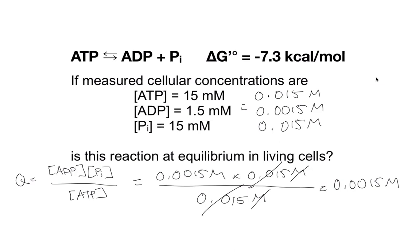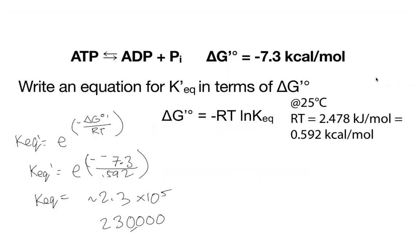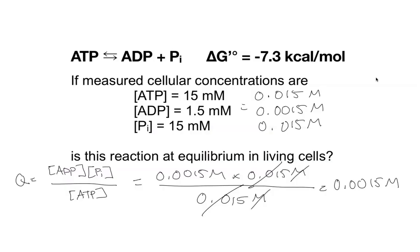Now we can put numbers in: 0.0015 molar times 0.015 molar over 0.015 molar. The ATP terms cancel, and what you're left with is 0.0015 molar, or 1.5 times 10 to the minus 3. Is that equal to KEQ? We found a minute ago that our KEQ was about 2.3 times 10 to the fifth. Our Q is 1.5 times 10 to the minus 3. So are we at equilibrium? No — we're far from equilibrium, and we're below KEQ. This tells us we don't have enough products as we would need for equilibrium — we have more of that ATP than we'd find at equilibrium. So equilibrium is going to drive it to the right.